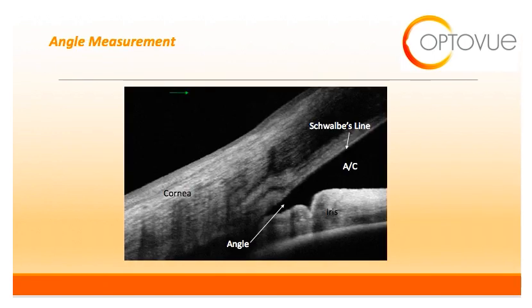Let's switch over now to the anterior chamber angle. OCT can be extremely useful in assessing the anterior chamber and can provide supplementary information on this very important structure. The angle is the area spanning between the cornea and the iris, and here you can see the anterior chamber and Schwalbe's line, which is the most posterior portion of the corneal anatomy.